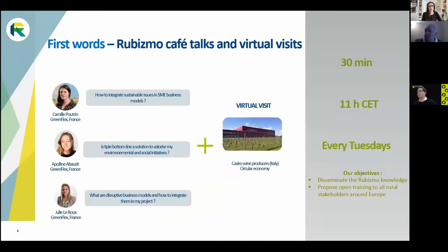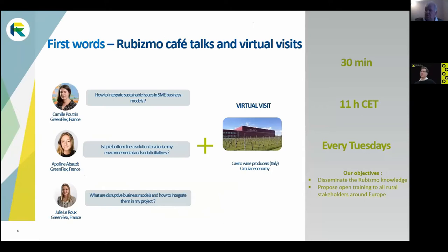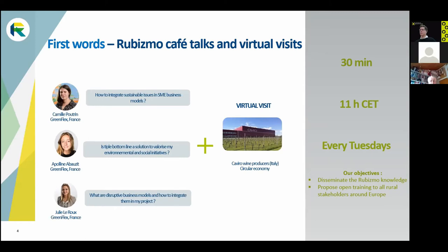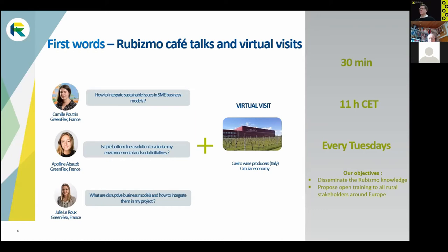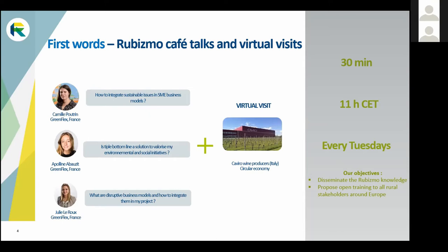Today we are at the second cafe talk of the third circle, looking at how to include sustainability in your business model. Apolline will talk about the triple bottom line and where to include the environmental and social aspects. We will have another presentation next Tuesday by Julie, and then we will all travel to Italy for the Caviro business case. All presentations will be available on the website and on our YouTube channel.